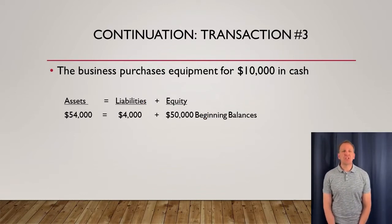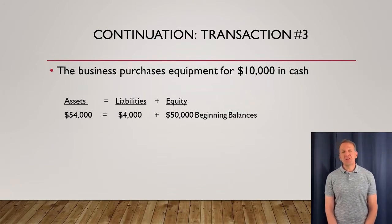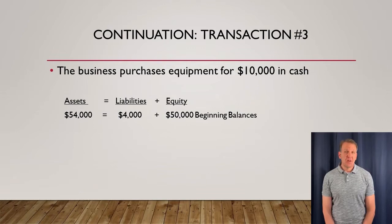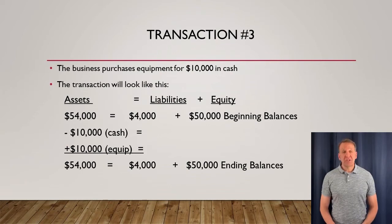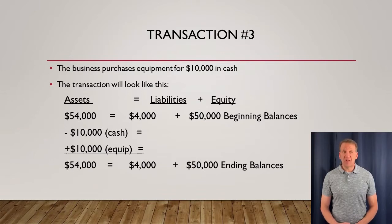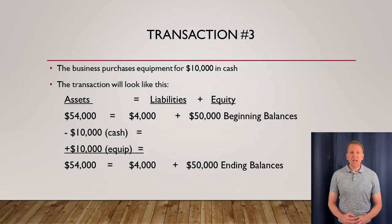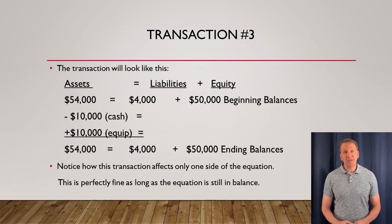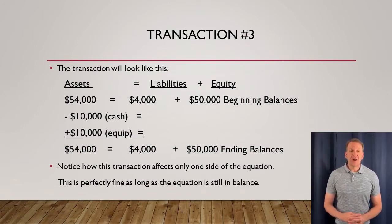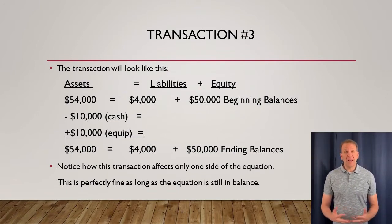In transaction number three, we're purchasing some equipment for cash and this equipment is costing $10,000. Cash is going down because we're buying the equipment. Equipment is an asset also, like cash, so equipment is going up. Our value for cash is going down and our value for equipment is going up. The ending balances didn't change because this transaction all took place under assets — one asset increased, one decreased — and our transaction still balances.